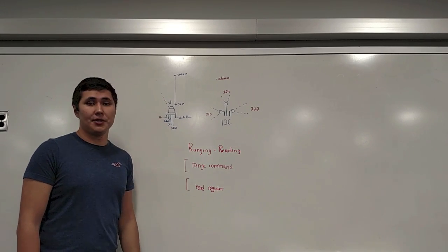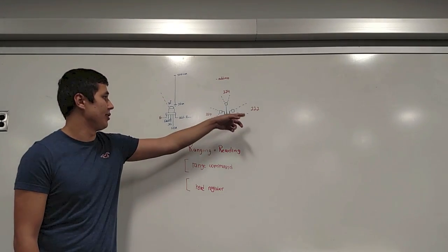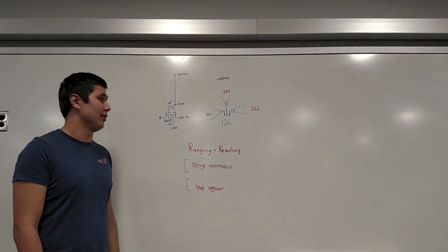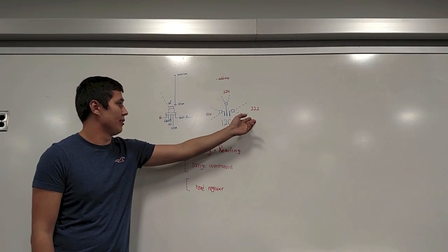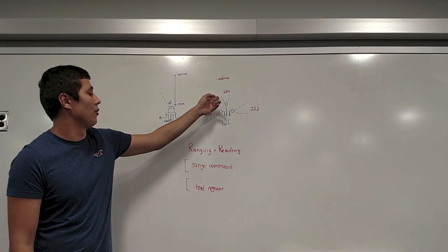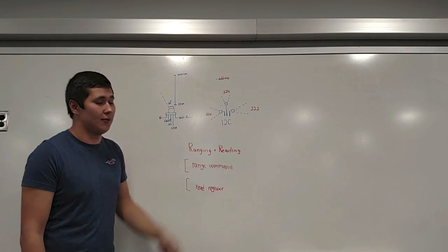To talk to the sensors, we're using the I2C protocol, where each sensor has a unique slave address, which is stored in the EEPROM. So the front sensor, for our example, has 222, 224 for front, and 220 for the left sensor.